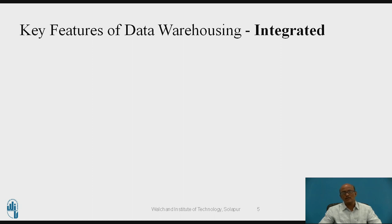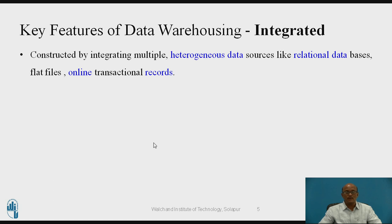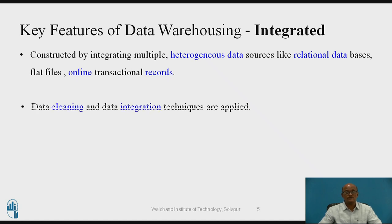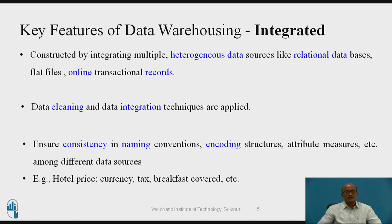The second key feature is integrated. Data is collected from heterogeneous places or various data sources — it may be relational databases, flat files, or data collected online as transactional records. All this data is collected, then the process of cleaning is applied and integration is applied on that collected data. Cleaning removes noise from the data, and integration puts all things from various databases into one format. It also ensures consistency in naming conventions, encoding structures, and attribute measures.